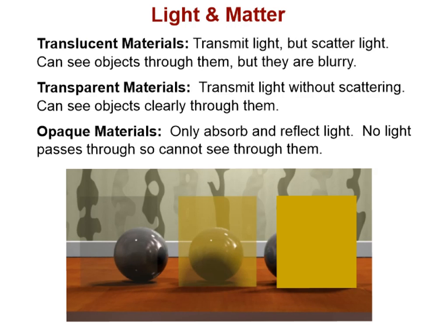Objects can absorb, transmit, or reflect light. Objects that transmit light allow light to pass through them, and an object's material determines the amount of light that it either absorbs, reflects, or transmits. This piece of material right here is an example of opaque material. Opaque material only absorbs and reflects light — no light is transmitted or passes through it, and as a result you cannot see the object behind this material.